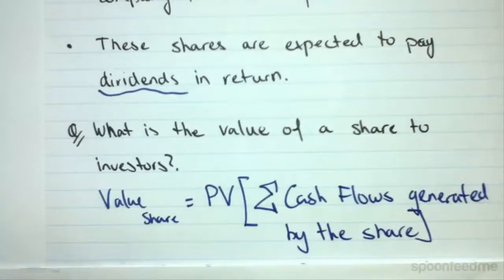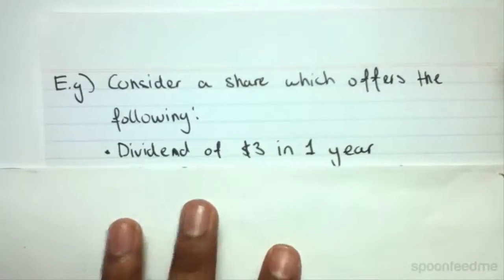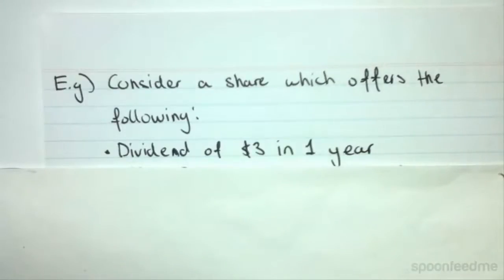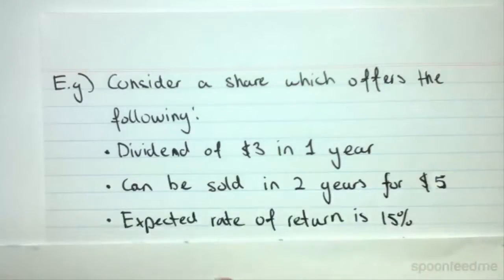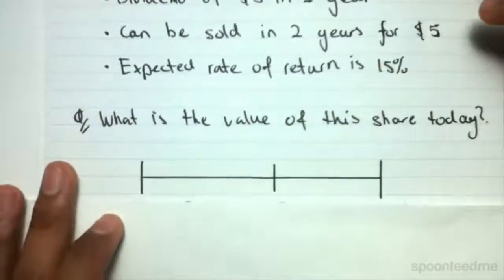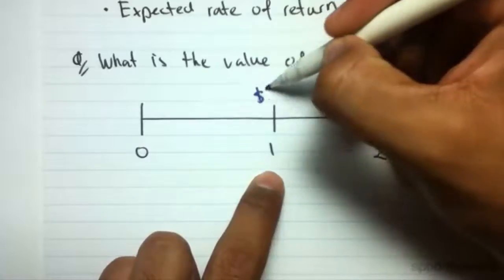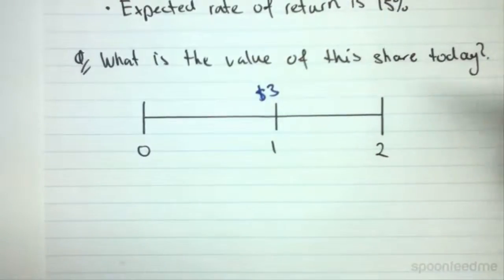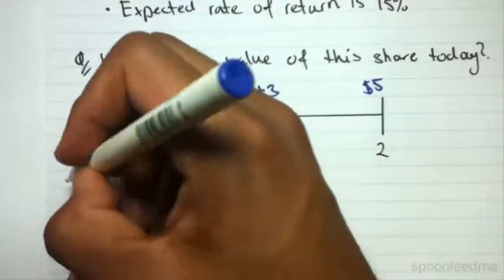Let's do an example. Consider a share which offers a dividend of three dollars in one year. In the second year, the share can be sold for five dollars, and the expected rate of return is fifteen percent. The question is: what is the value of this share today? On a timeline, in the first period we get three dollars, and in the second period we get five dollars from selling the share.